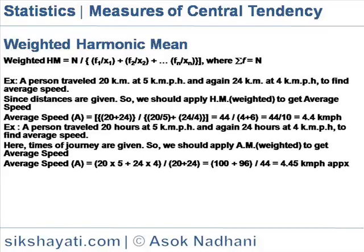This is demonstrated by the following example. A person travelled 20 km at 5 kmph, then again 24 km at 4 kmph. To find the average speed, since the distances are given, we should apply weighted HM to get average speed. Average speed is equal to (20 + 24) / (20/5 + 24/4) = 44 / (4 + 6) = 44/10 = 4.4 kmph.